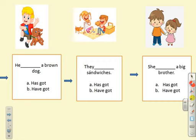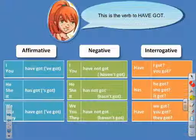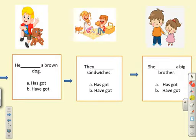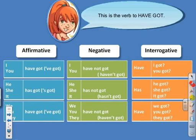He has got a brown dog, or he have got? Remember, 'he' is a friend of 'has got' — so: he has got a brown dog. Next: they has got sandwiches, or they have got sandwiches? They have got sandwiches. Excellent! Third picture — she has got a big brother, or she have got? She has got a big brother. Excellent!